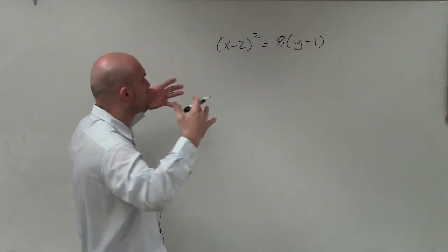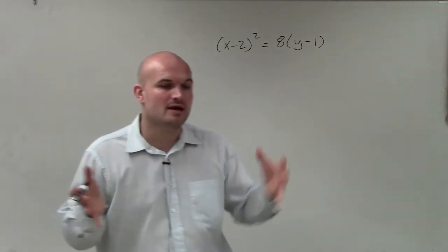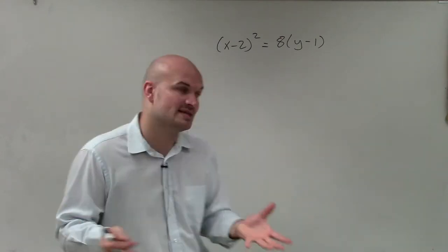So the first thing I notice is I see that the x variable is going to be the one that's squared. Therefore, that's going to tell me that my parabola is going to have a vertical axis of symmetry, and the parabola is going to either open up or down.